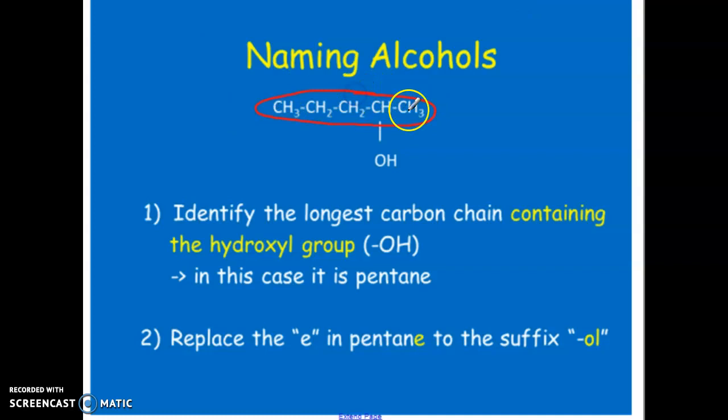You want your parent to be the longest continuous chain and the OH should be coming off somewhere on that main chain. In this case, we will start counting closest to the side of the molecule that the OH is closer to.